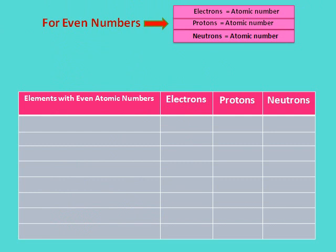This is the simplest trick you have ever noticed. You can see the formula in the top right corner. For even atomic numbers, the number of electrons, number of protons, and number of neutrons are all equal to the atomic number of the element.